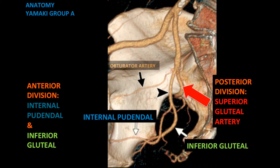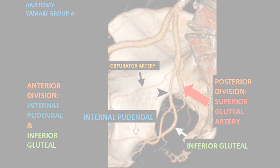We also have a small branch called the obturator artery, which is actually part of the posterior division and arises from the superior gluteal artery. This is the classic male pelvic anatomy, and remember this arterial anatomy is seen in about 60 to 80 percent of patients.